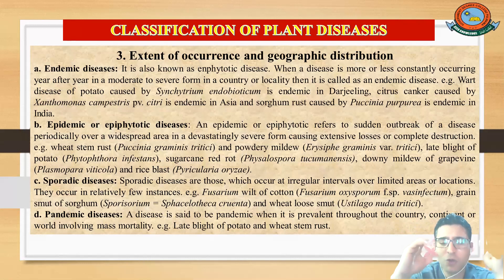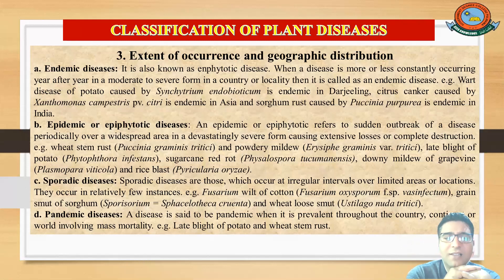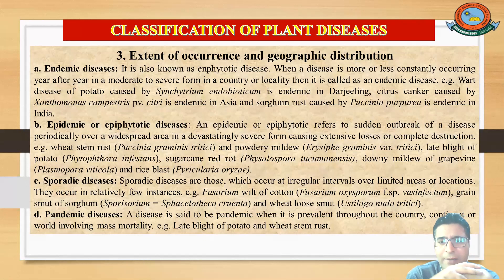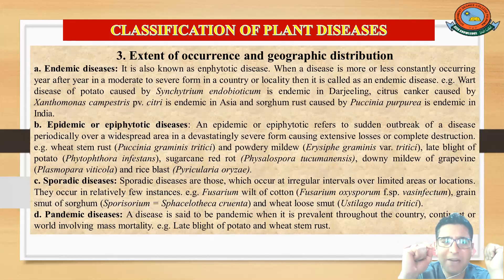Epidemic or epiphytotic disease is one that suddenly breaks out periodically over a wide area, causing extensive losses and complete destruction. For example, a very common disease caused by Puccinia graminis causes wheat stem rust. Other examples include powdery mildew, late blight of potato caused by Phytophthora infestans, sugarcane red rot, downy mildew of grapevine, and rice blast caused by Pyricularia. These diseases periodically outbreak in a region with severe effect and can cause complete destruction or extensive loss.